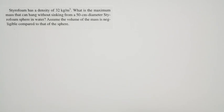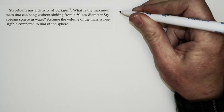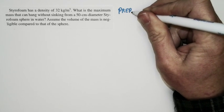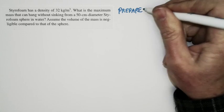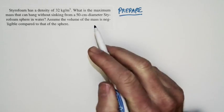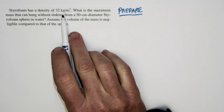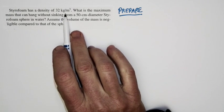Let's take a look at this problem. This is one of those ones that seems slightly silly in the way that it's set up, but it's making a real point. So let's look at this. There's a 50 centimeter diameter styrofoam sphere, which is in water, and it's got a very low density, 32 kilograms per cubic meter.